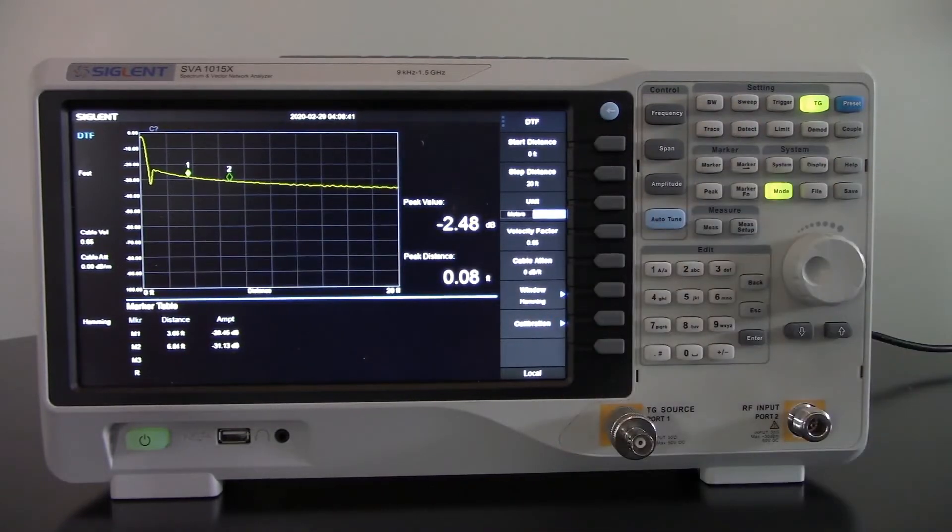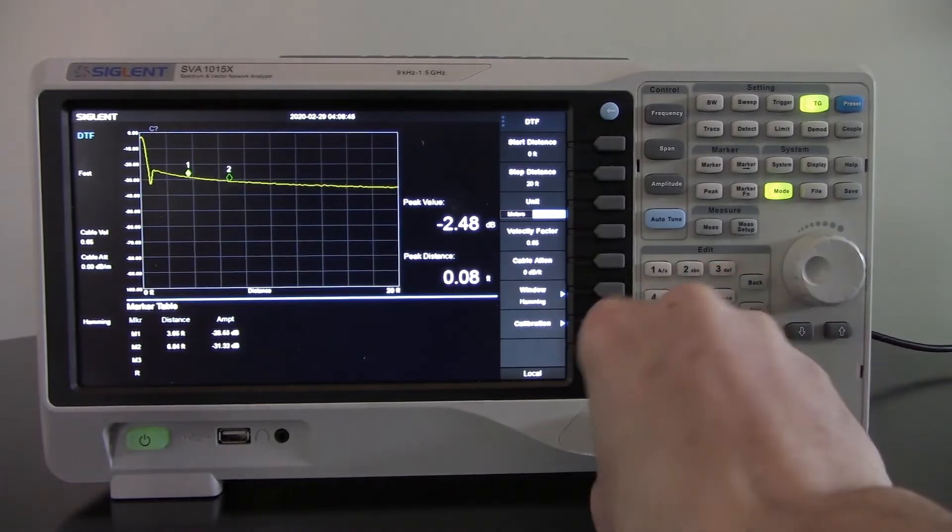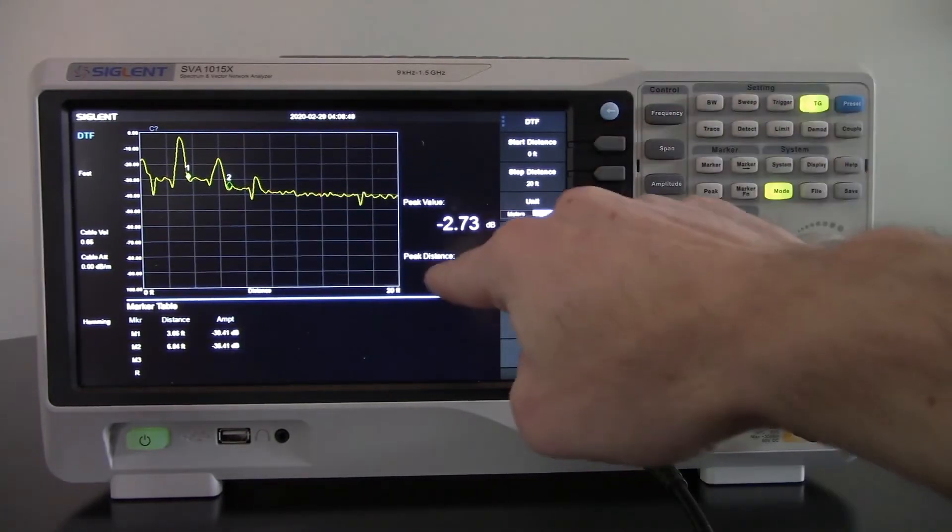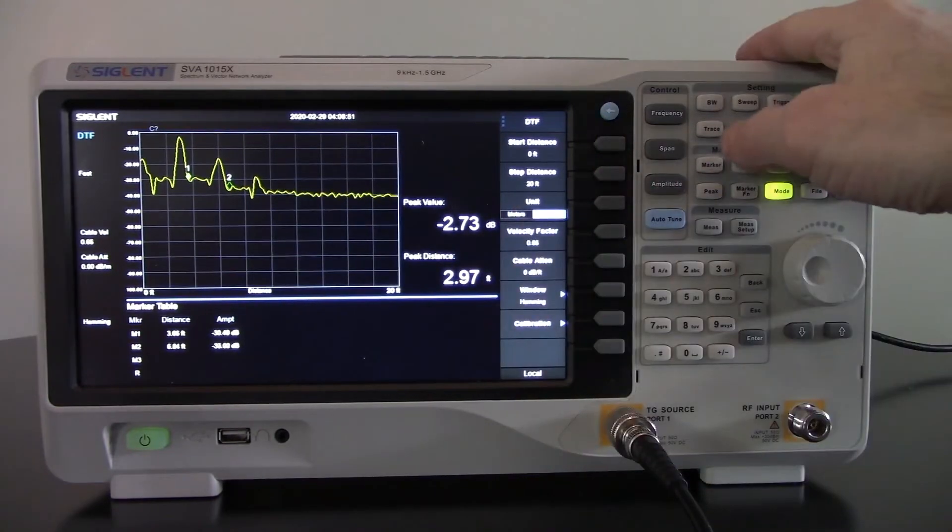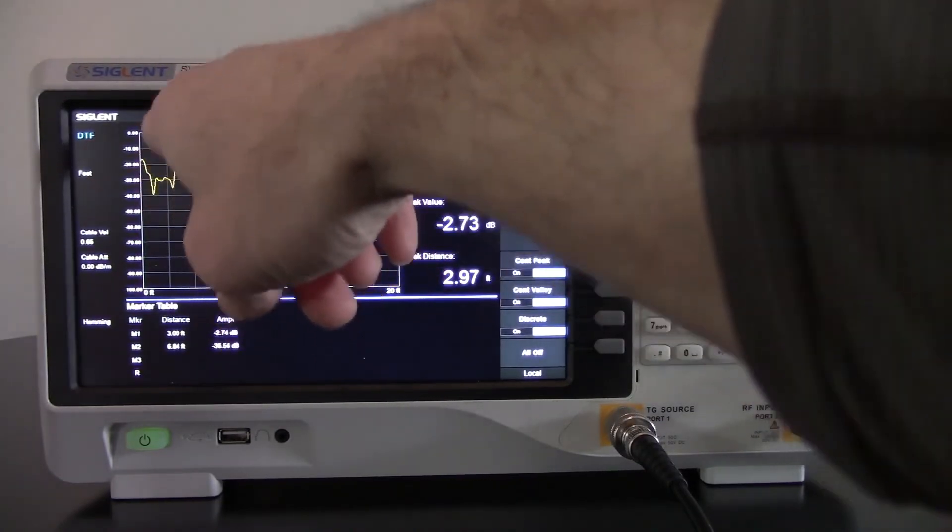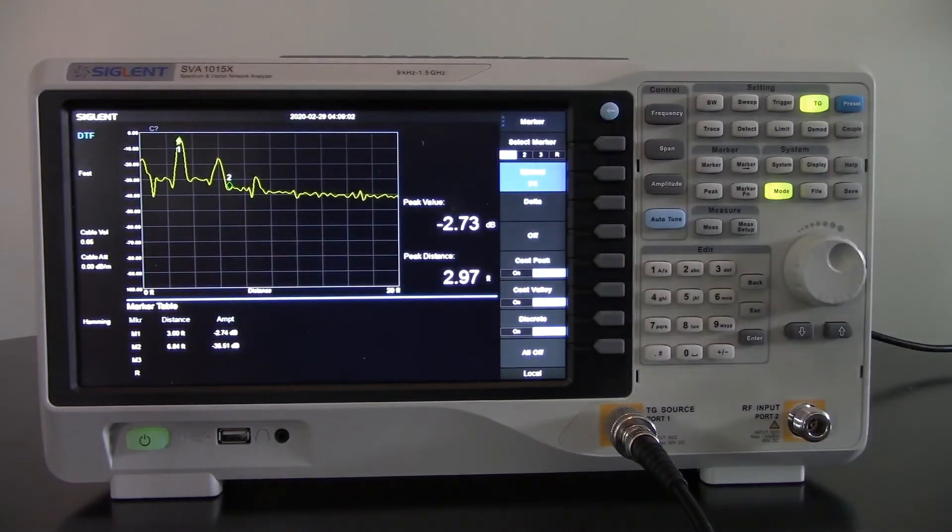We've got cable attenuation and then the different windowing features. I'm going to connect up this three foot cable, which is open termination. And you'll see my peak distance is reading at 2.97. I'm actually going to move the marker number one over to that peak. And there we go. Yep, three feet exactly.